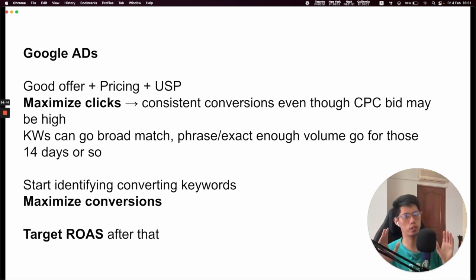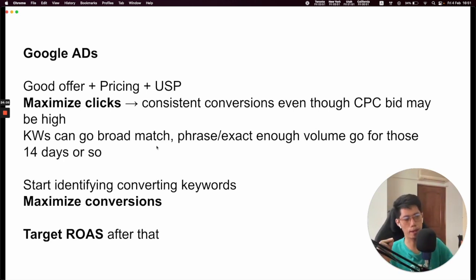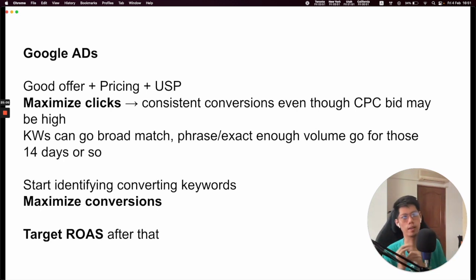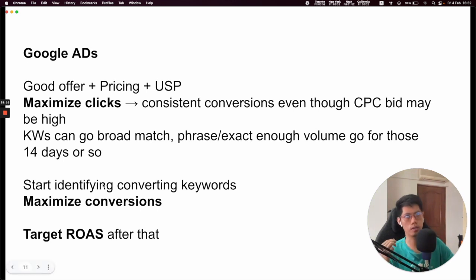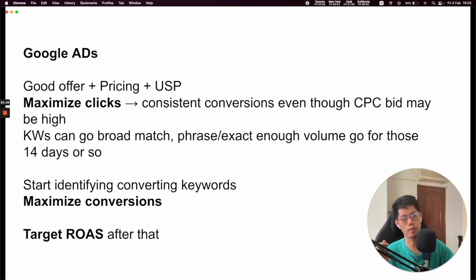After around 14 days or so — Google is definitely much slower than Facebook, you need to give it time to breathe, because sometimes it overspends and sometimes it underspends — you can go into broad match. In the past I was scared to go into broad match, just doing phrase and exact match. But I feel broad match can still open up your top of funnel and bring traffic in as much as possible. So the keywords that start converting after 14 days — you can change it to Maximize Conversions. You go from Maximize Clicks to Maximize Conversions, then start identifying the keywords that have converted from Maximize Clicks.